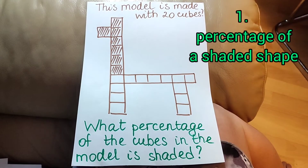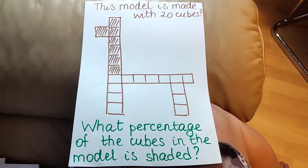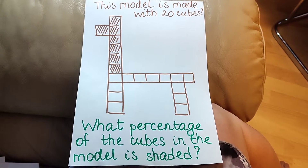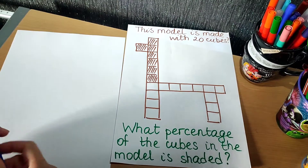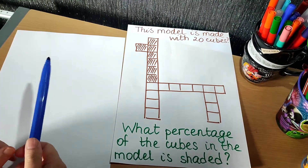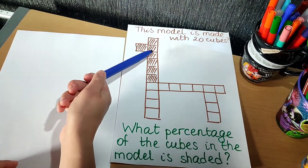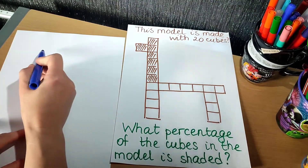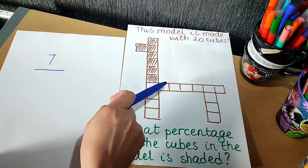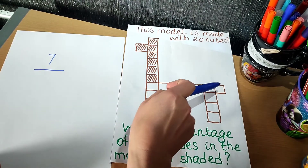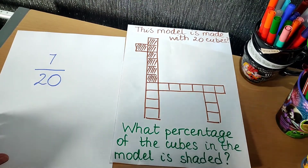This is the first question. It says this model is made with 20 cubes. The question is: what percentage of the cubes in the model is shaded? Well, how are we going to solve this problem? Can we find what fraction of the shape is shaded — how many cubes out of how many are shaded? One, two, three, four, five, six, seven. Seven cubes out of 20 altogether are shaded. So the fraction is seven twentieths.